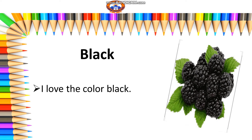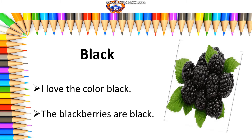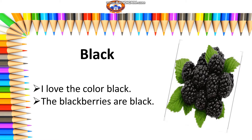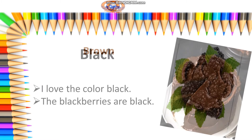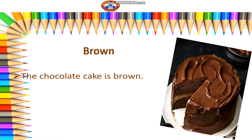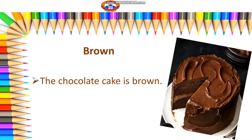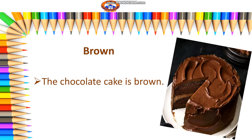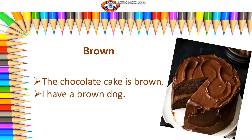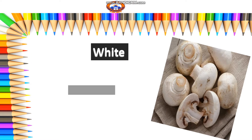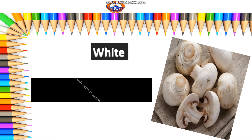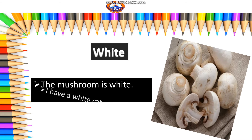Black. I love the color black. The blackberries are black. Brown. The chocolate cake is brown. I have a brown dog. And the last one is white. The mushroom is white. I have a white cat.